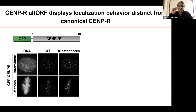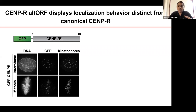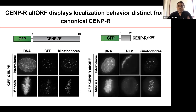The full-length protein localizes to very specific puncta or foci within the nucleus of the cell. We expected this because we know SEMP-R functions within a broader protein complex that localizes to specific regions of the DNA called kinetochores. But surprisingly, when we looked at the localization of this small 37 amino acid peptide, we saw it had a very distinct localization behavior.